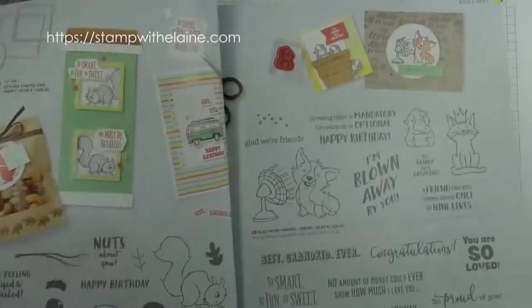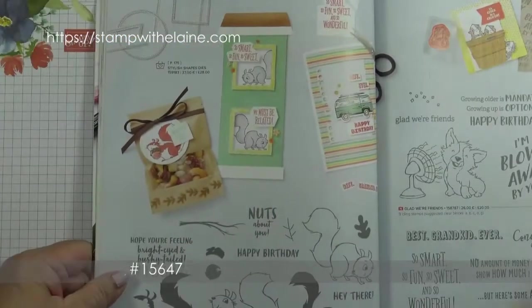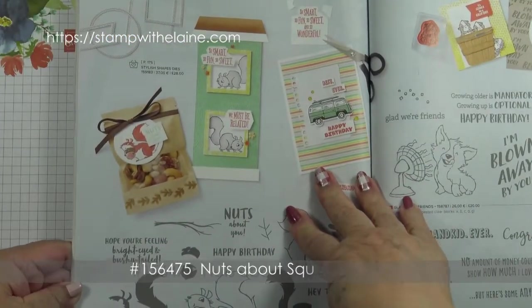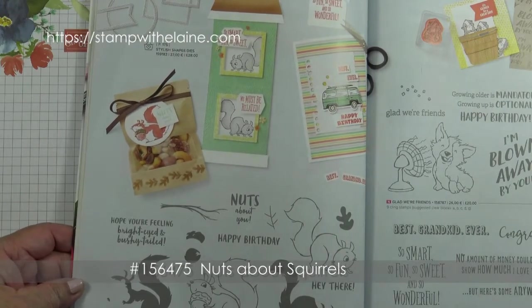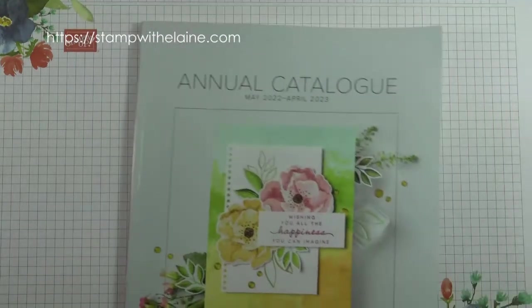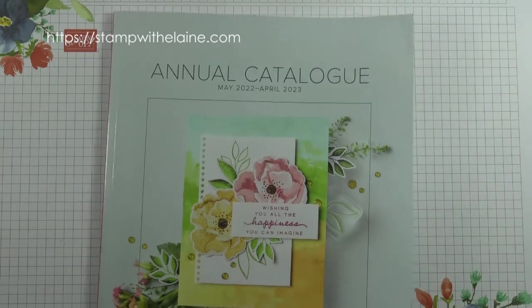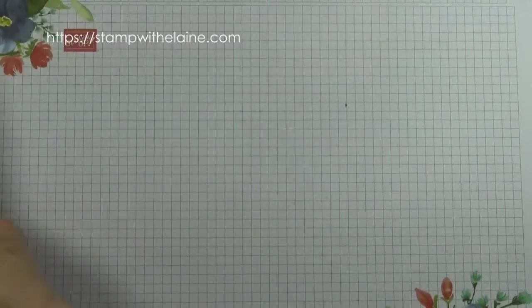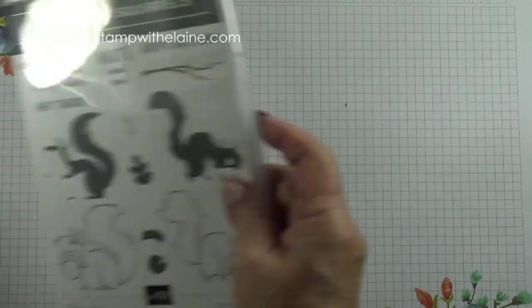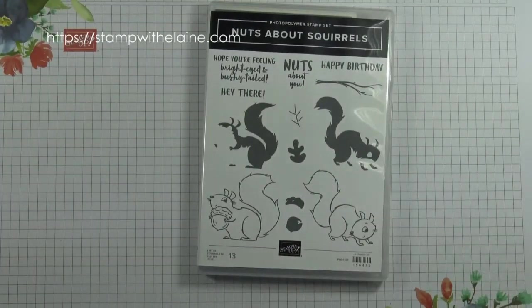I'm going to be using that stamp set and the other stamp set I'm using is actually from the annual catalogue and it's called Nuts About Squirrels on page 50 of the May 2022 to April 2023 annual catalogue. So I'm using the Grateful from Cottage Wreaths and this stamp set called Nuts About Squirrels.